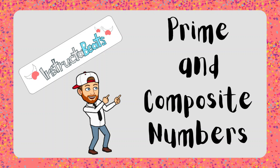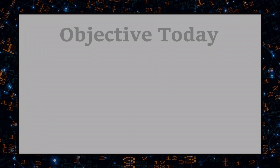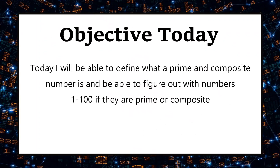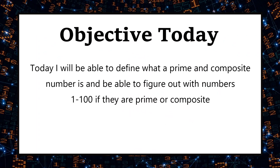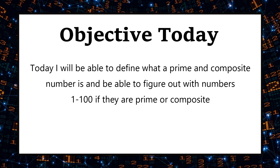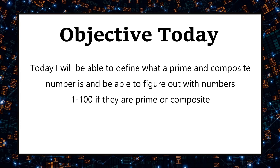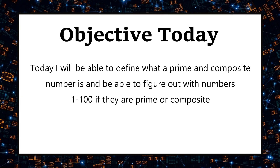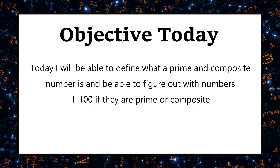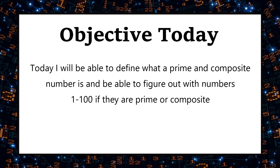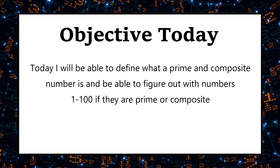What up everybody? Instructor Beats back again here with another awesome math lesson. Today we're going to be talking about prime and composite numbers. So let's take a look at what our objective is today. We'll be able to define what a prime and composite number is and be able to figure out numbers 1 through 100 if they are prime or composite. So we're going to be taking the definitions and doing a little bit of application.